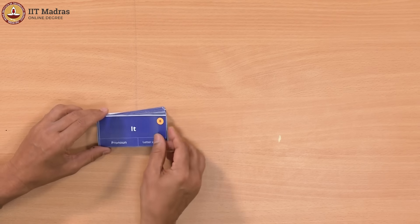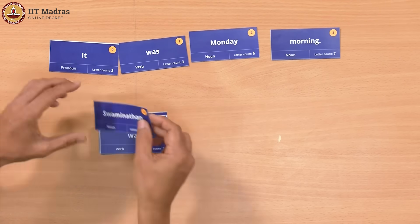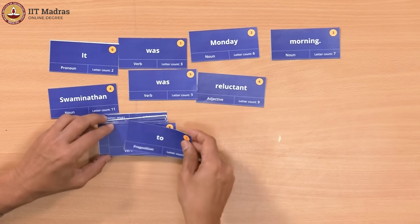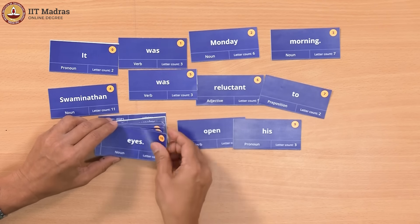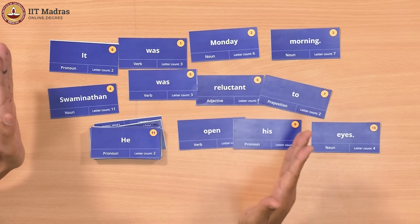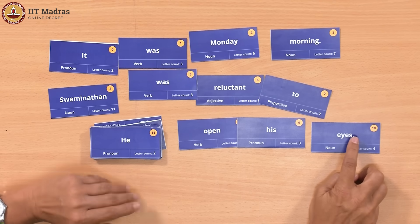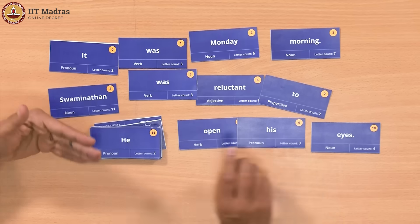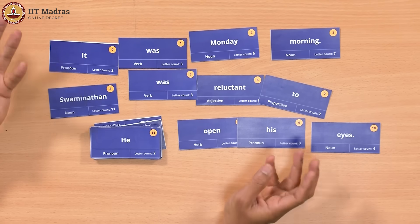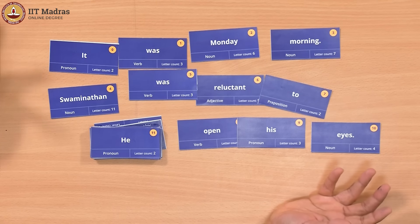If you remember the paragraph, it started off with 'it', 'was', 'Monday', 'morning' — so these are the first four cards. 'Swaminathan was reluctant to open his eyes.' This is just a systematic way in which we have taken the paragraph and broken it up into single words. We have taken the punctuation, for example the full stop, and put it along with the words so that it is not separated out. What we can now do is ask questions about these words — for instance, how many nouns are there, how many verbs are there, which is the longest word, how many sentences are there, in which case we have to figure out how to decide when a sentence ends. This will be our third data set on which we will illustrate our computational thinking patterns.